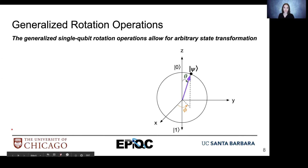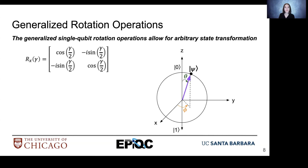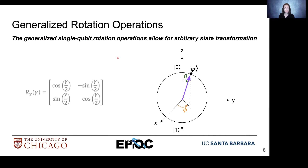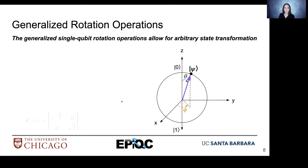We looked at specific qubit operations, but let's generalize them. What if we want to rotate anywhere around the Bloch sphere? There are equations to do that. For a general x rotation, we're trying to rotate an angle gamma around the x-axis — for any arbitrary degree, we use the Rx equation. If we wanted to rotate around the y-axis, we use the Ry equation. Finally, if we wanted to arbitrarily rotate around the z-axis — adjusting the phi part of our Bloch sphere — we use the Rz equation.